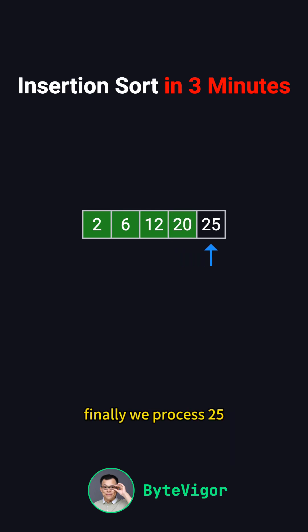Finally, we process 25. Since 25 is larger than 20, no elements need to be moved, and it stays in its current position. The array is now fully sorted, 2, 6, 12, 20, 25. And that's Insertion Sort in action.